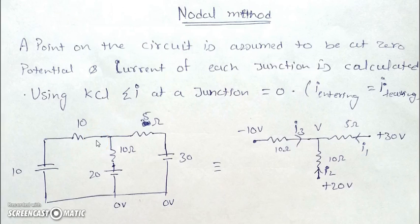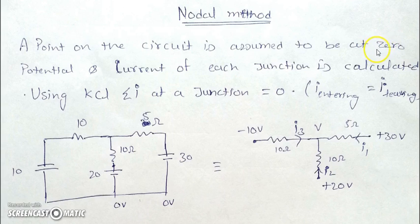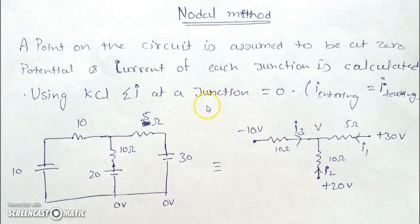In this video we'll be looking at the nodal method, a method in which a point on the circuit is assumed to be at zero potential. Zero is just a reference — we could have taken 10 or 20 volts, but for simplicity we take any point to be zero. The current at each junction is calculated using potential difference equal to IR (Ohm's law), and we use the principle that current entering must equal current leaving — the summation of currents at any junction must be equal to zero.